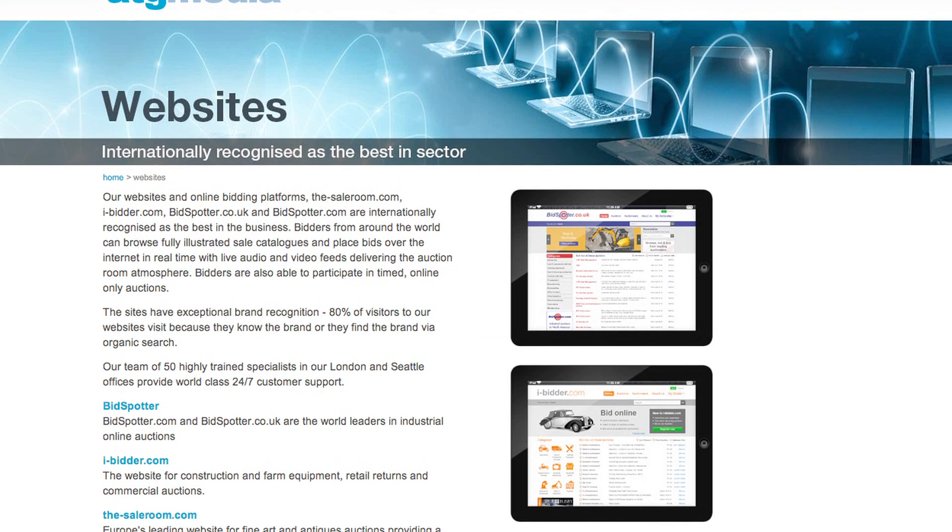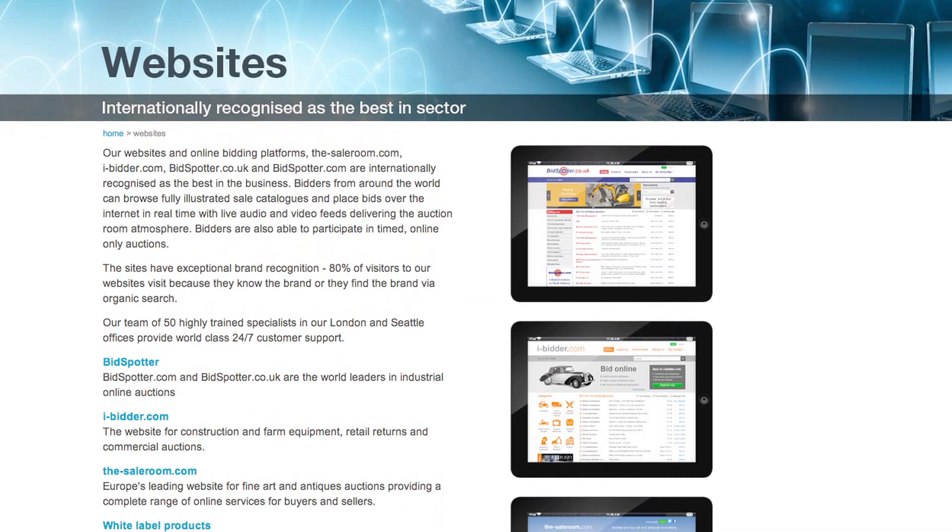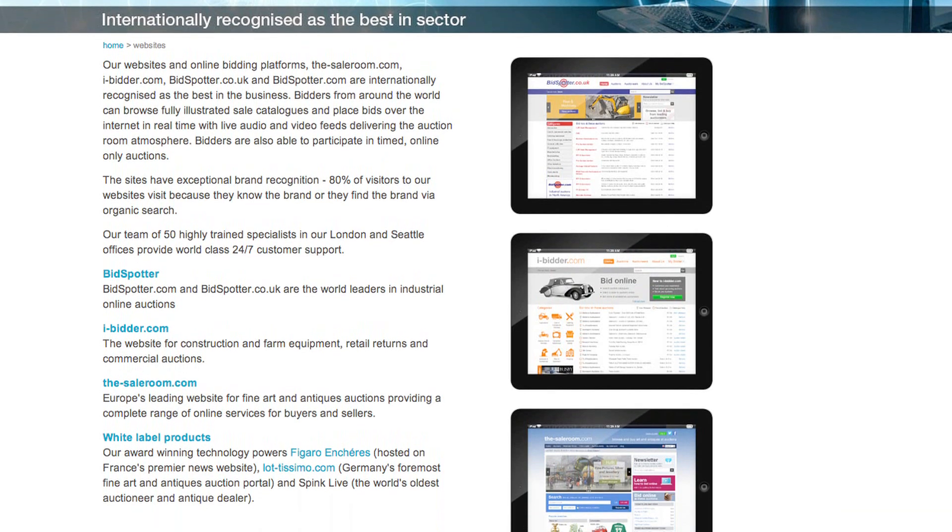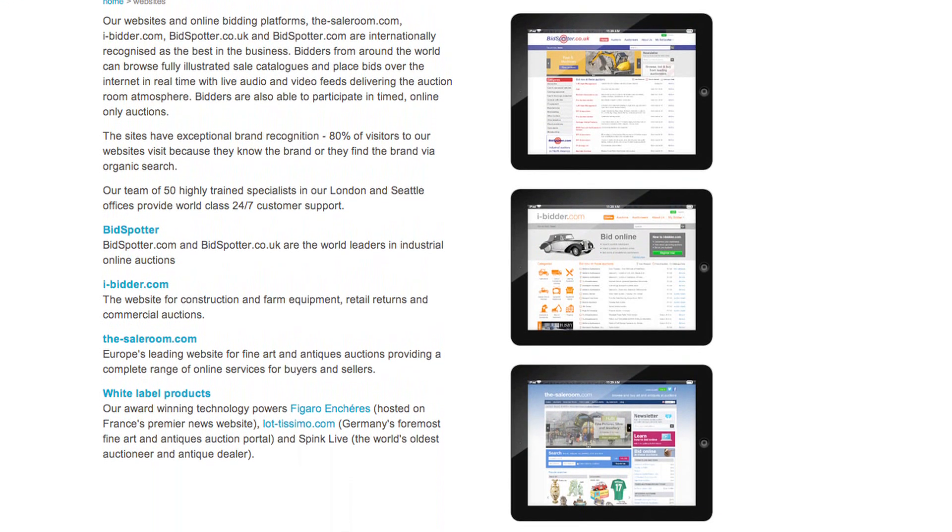My name is Simon Griffiths. I'm the head of architecture for ATG Media. Our customers are anyone who wants to buy something at auction, so that could be a collector, that could be a farmer wanting to buy a tractor or livestock, and our other customers are auctioneers, so people who sell stuff at auction.